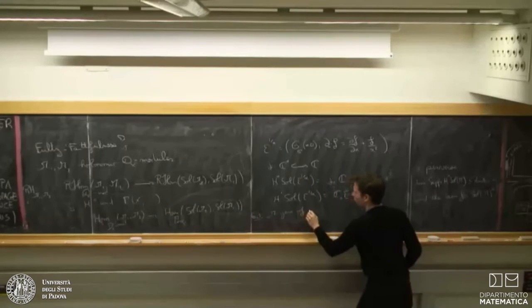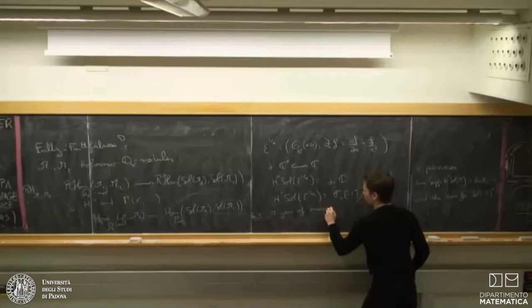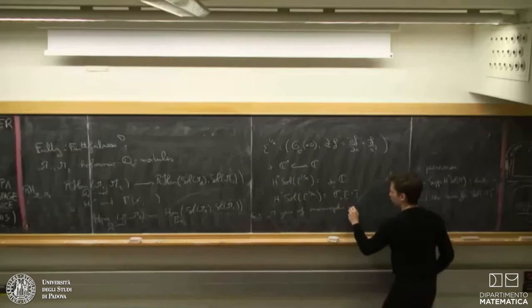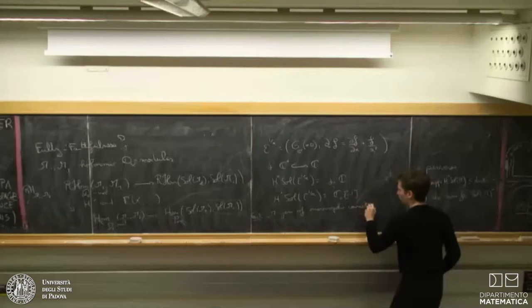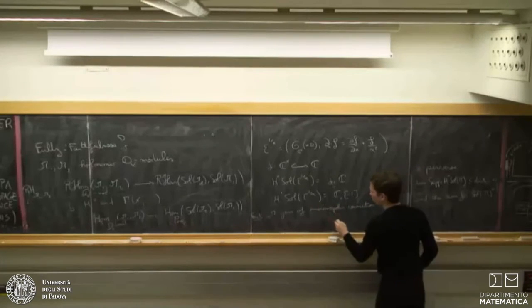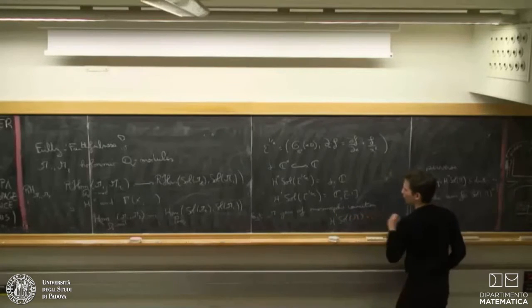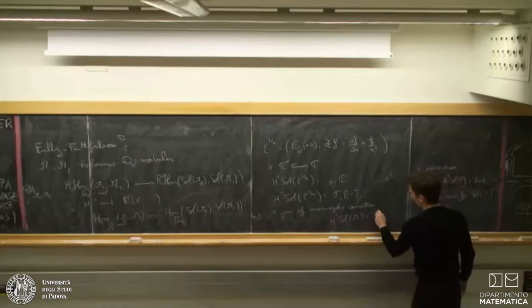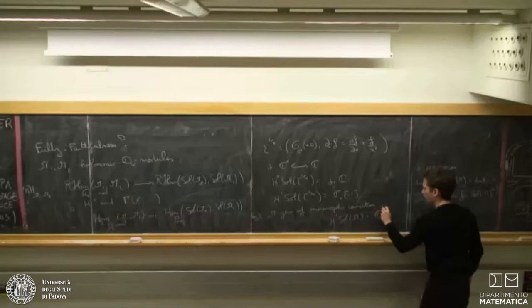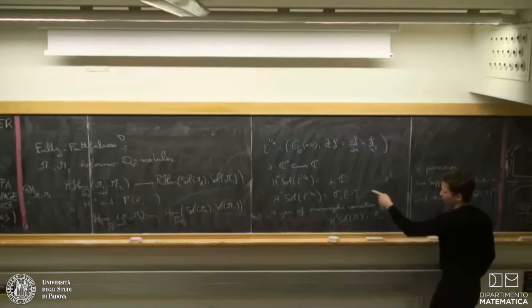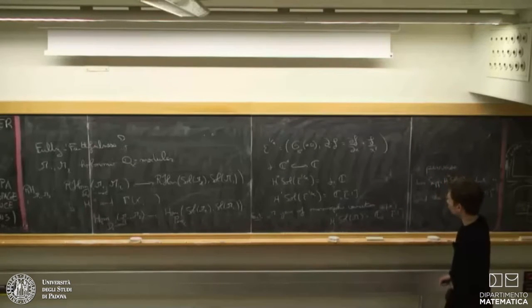So, in general, if you take M, a germ of meromorphic connection, then this H1, this is, again, a skyscraper sheaf, but the dimension here is the irregularity number of your connection. And in that particular case, this is 1.